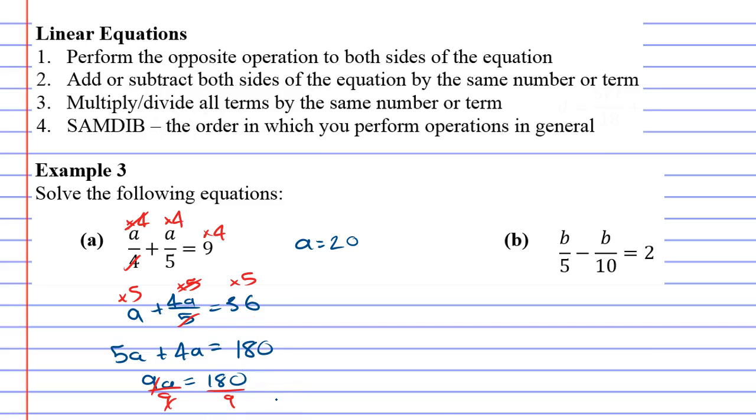So we'll look at question B. Very similar process, in fact the same process. What we'll do is we will multiply by 5 to cancel out this 5 and then we'll do the same to the other two terms.